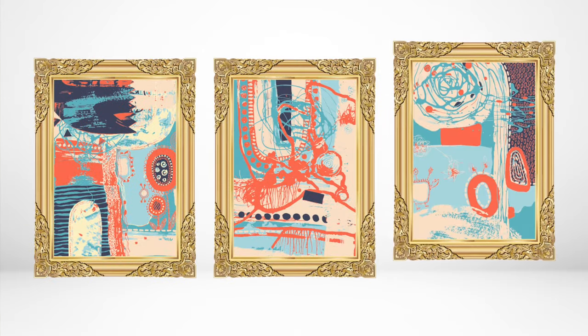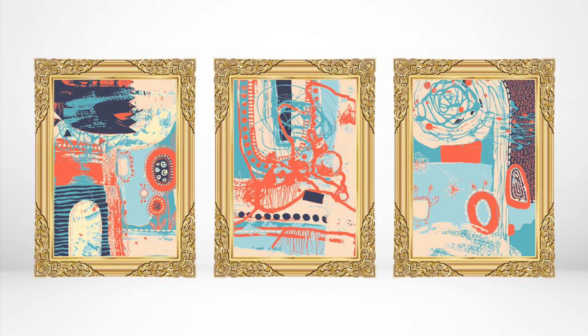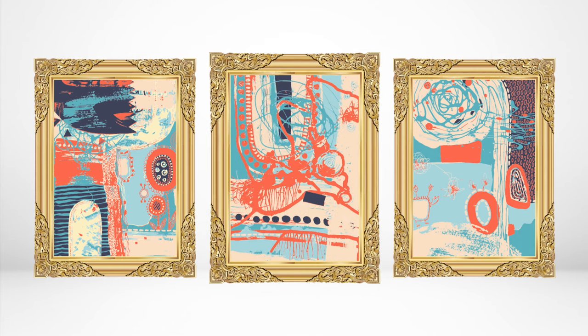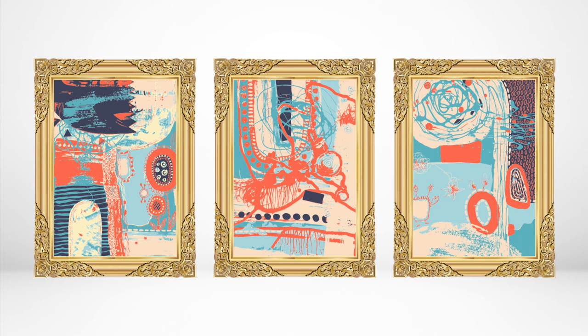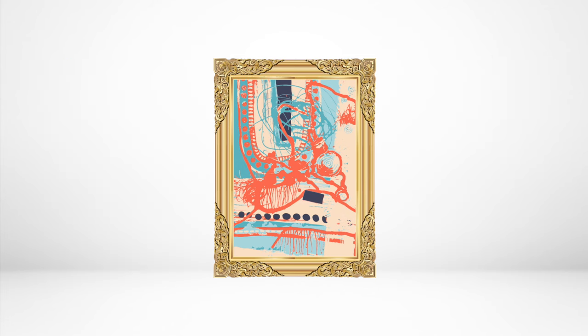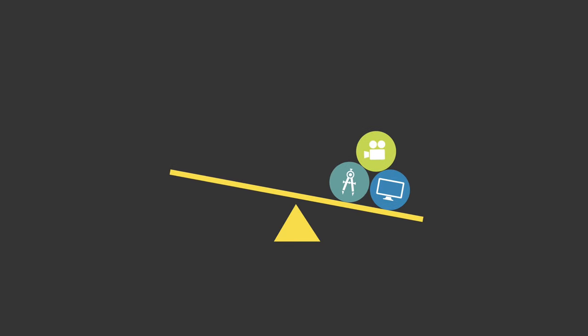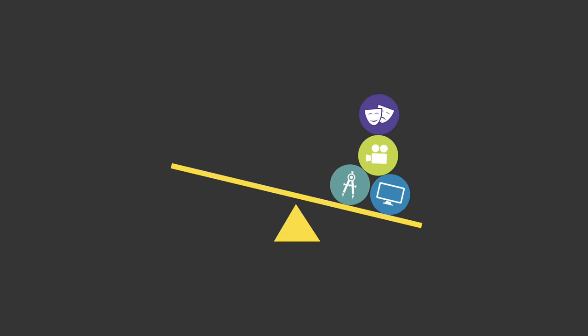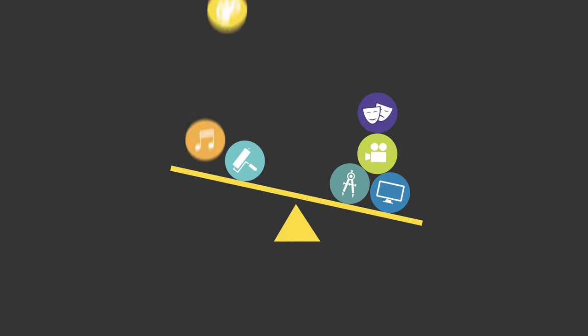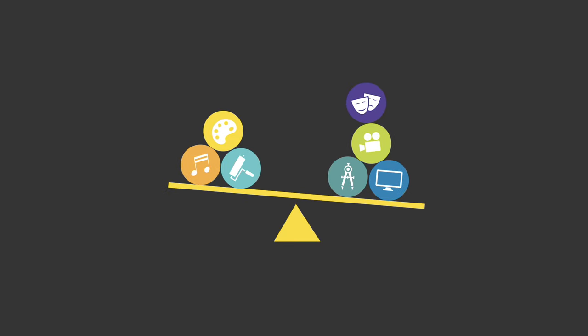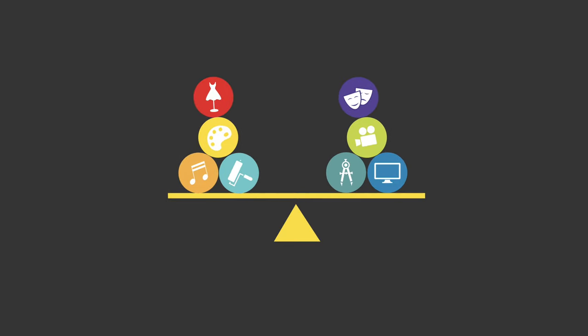Balance is aided by space, because objects have greater impact when given the room to breathe. Balance is a design principle that's present in all areas of design. It transforms the lopsided into the perfectly poised.